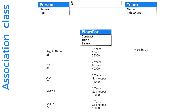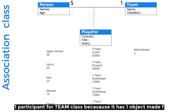Now a person plays for a team, and 'plays for' is the association between the two. This 'plays for' association class has its own three properties: contract, title, and salary. We can also show the participants of each class — a person has name and age. The team has two properties: name and titles, shown once as 'Manchester' and 'five' because only one team is participating.